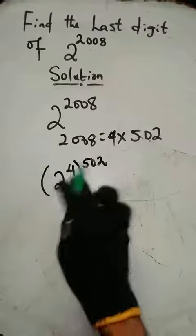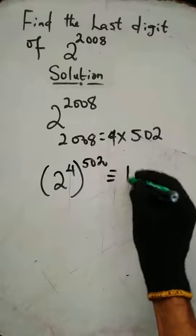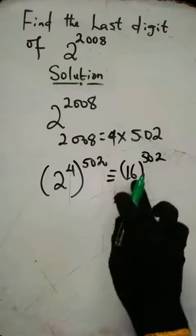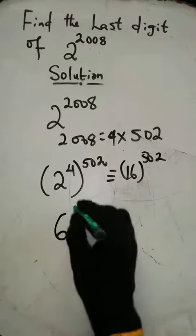Now 2^4 equals 16, so we have (16)^502 in brackets. The last digit here is 6, so we take it out: 6^502.